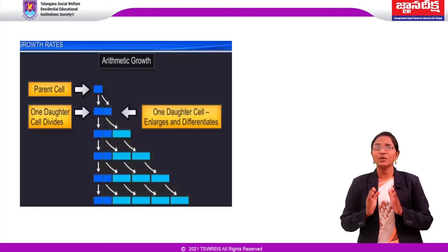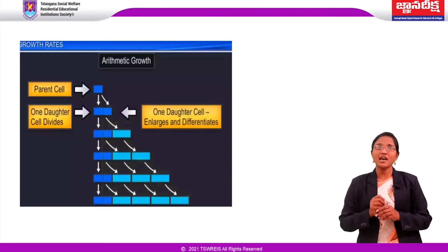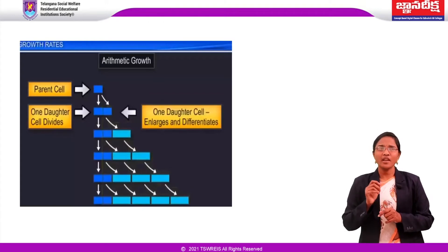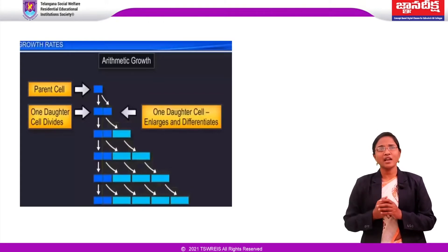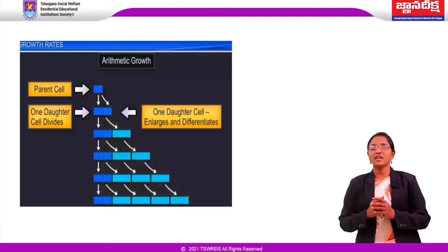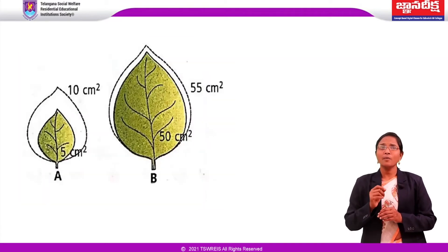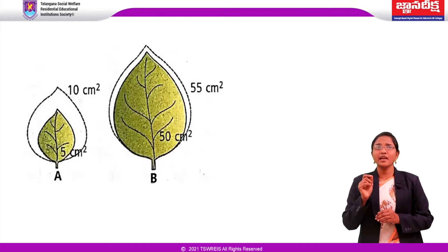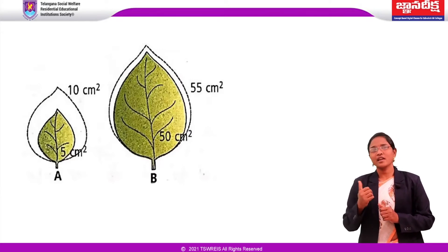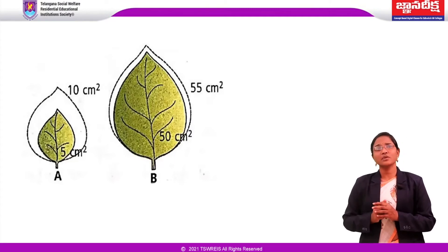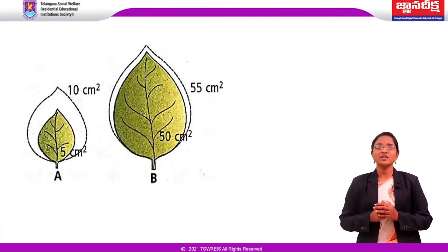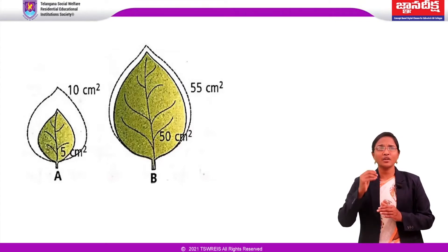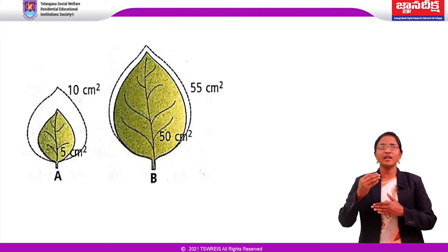The formula of relative growth rate is: growth per unit time divided by initial size, multiplied by 100. For example, consider two leaves of different sizes that show the same absolute increase in area in a given time. According to the relative growth rate formula, the first leaf shows a higher relative growth rate.